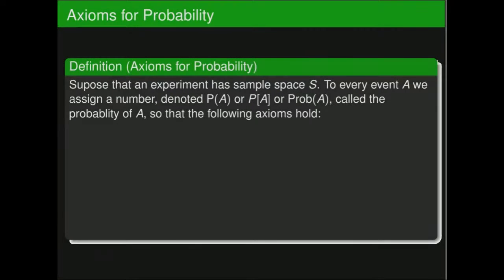Let's talk about some axioms we would like to have for our probability functions. We start with an experiment that has a sample space, and to every event A we assign some number P[A] — the probability of the event A. The first axiom is that the probability of any event is always going to be between 0 and 1 inclusive. Probabilities will never be negative and never greater than 1.